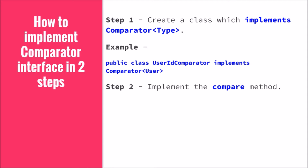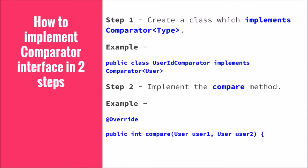In step two, implement the compare method. We say 'public int compare' and pass two User objects, user1 and user2. Since we are comparing based on id, we return 'user1.getId() minus user2.getId()'. This compares the id values and whichever is lesser will be placed in the lower sorting order. This int return type returns a negative value when user1's id is less than user2's.